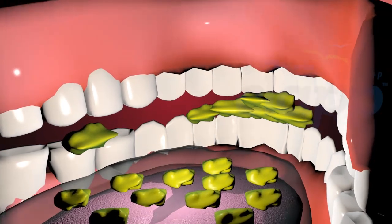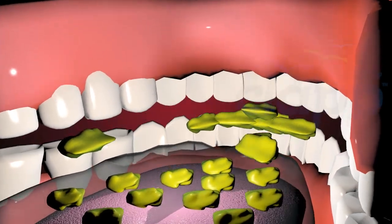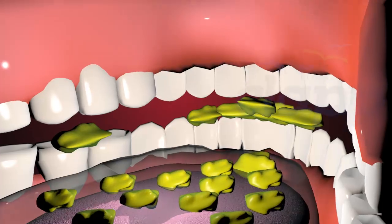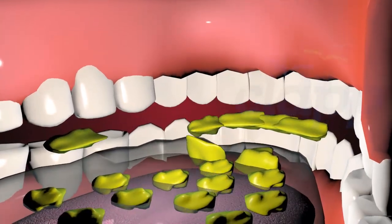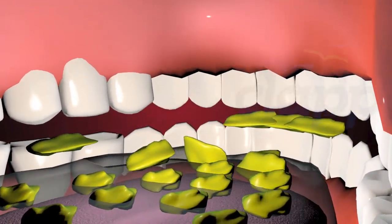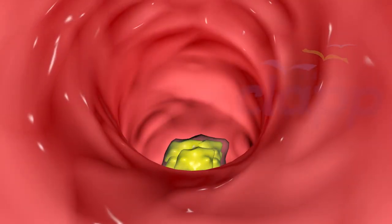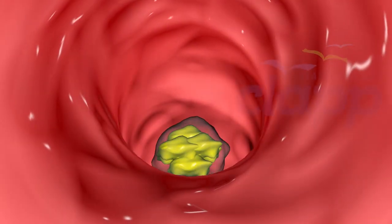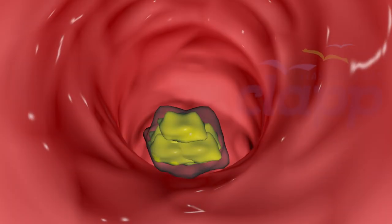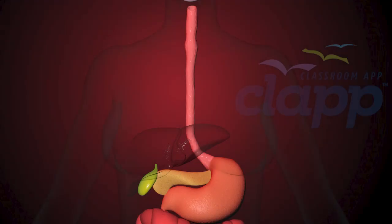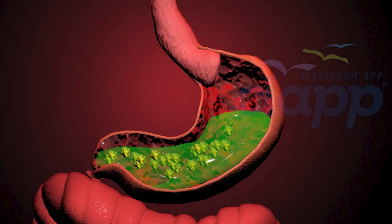The digestive process starts in your mouth when you chew. Chewing breaks the food into pieces while saliva mixes with food. Once you begin swallowing, the process becomes automatic — muscles in your esophagus propel food down to your stomach.